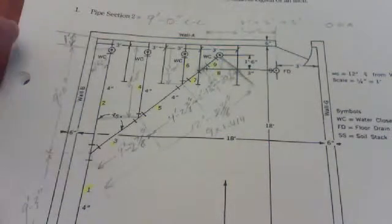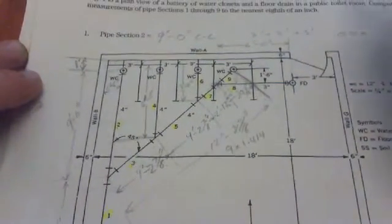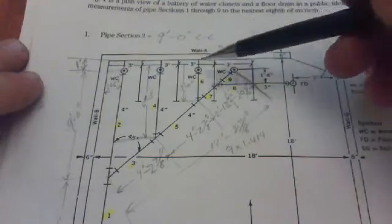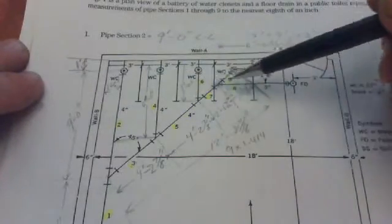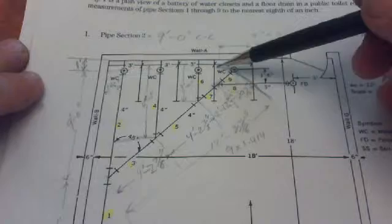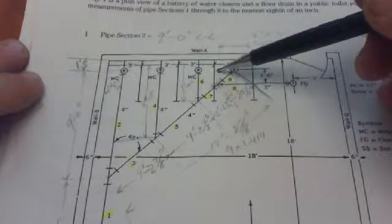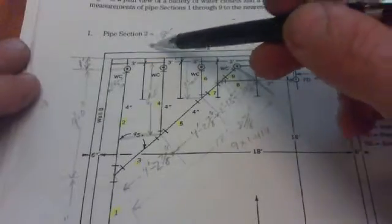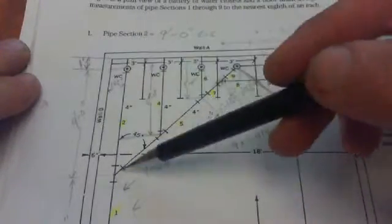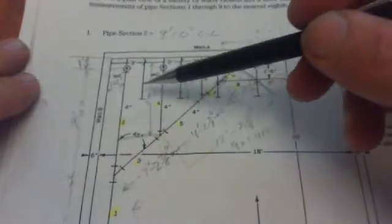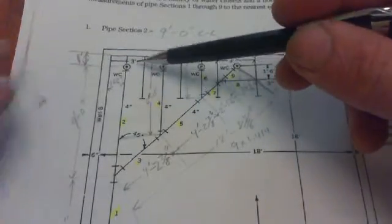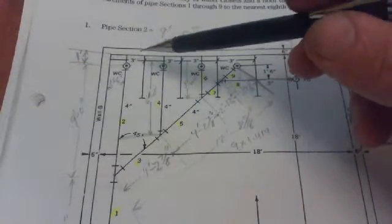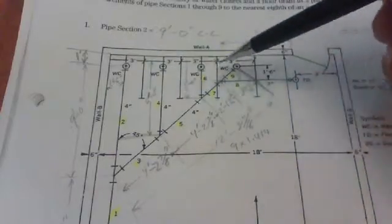For this video I'll go over assignment 4 on chapter 4. This one had a series of pipes that I need to find the dimensions of. So starting off here with pipe section 2. That's the first one you're going to look for.